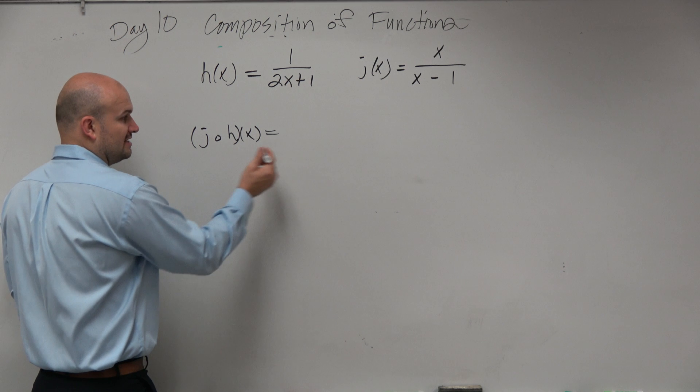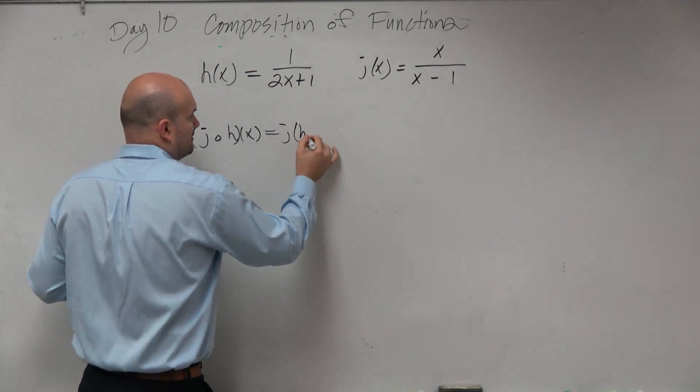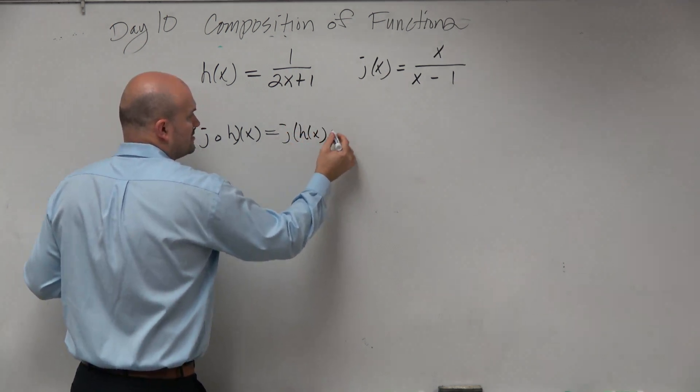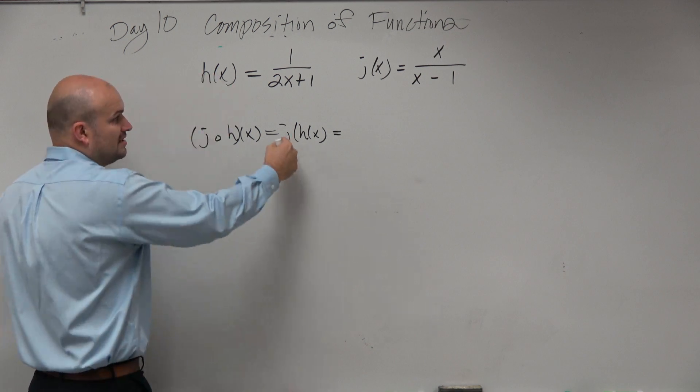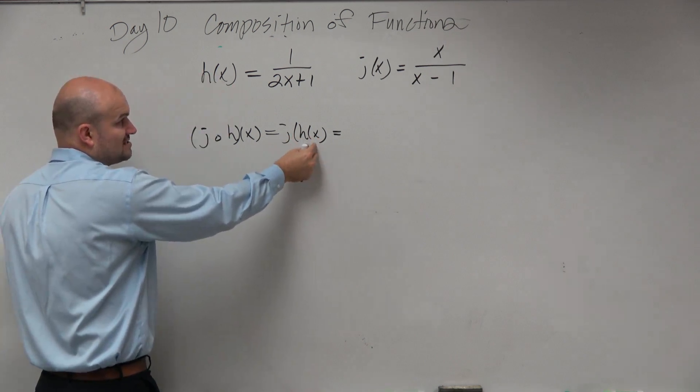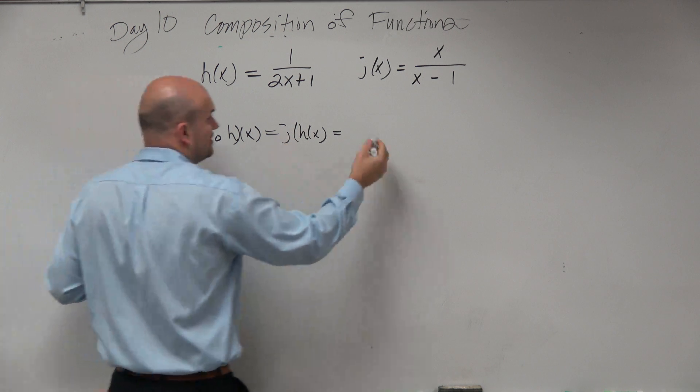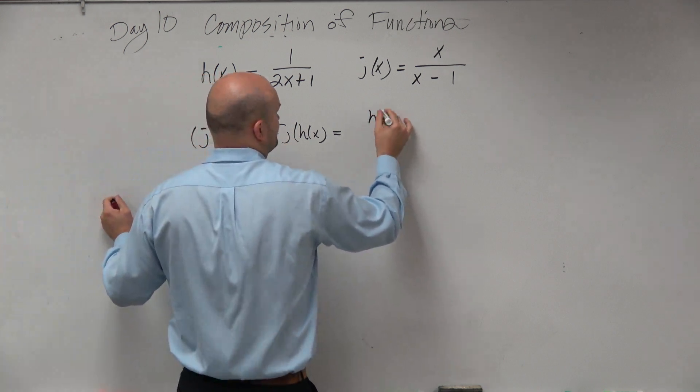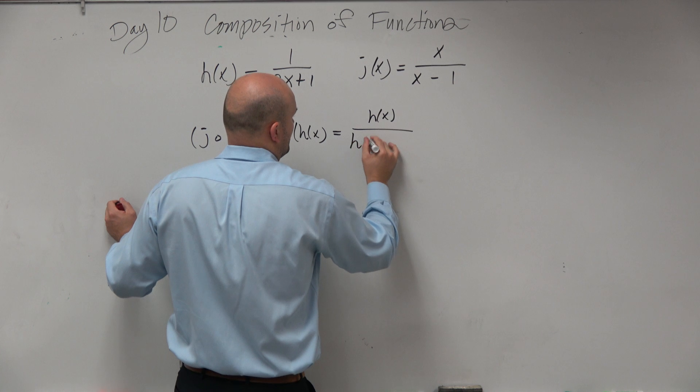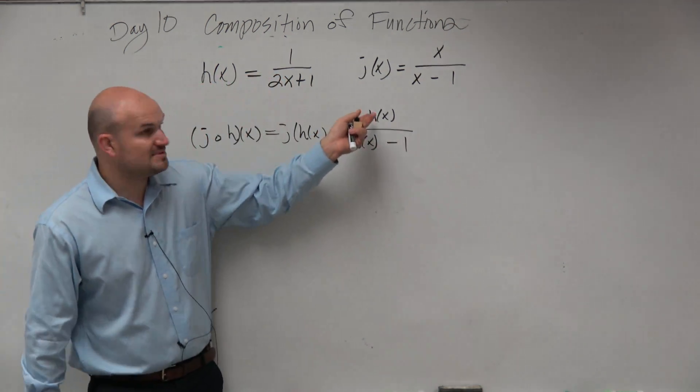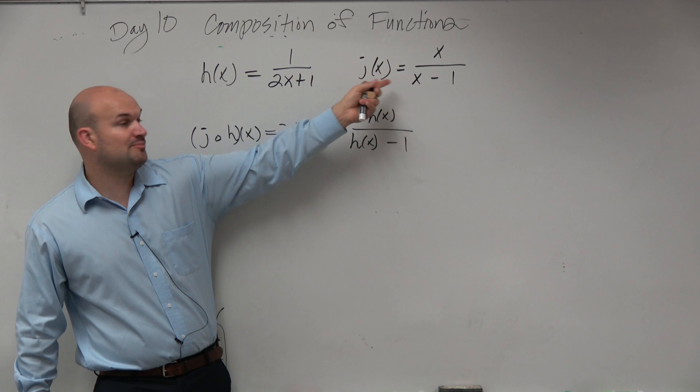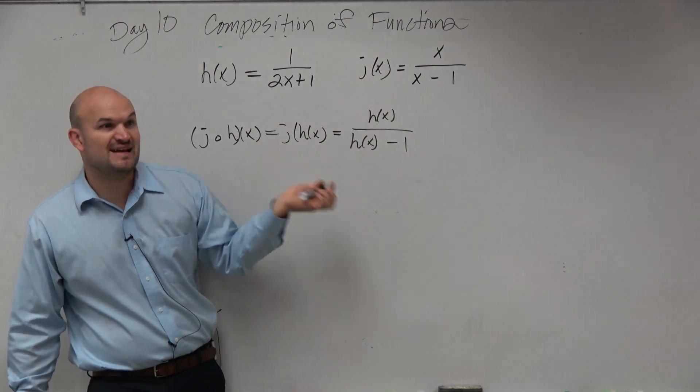The first thing we want to understand is that, again, this is this. So, you don't need to show every step that I'm doing, but just for instructional purposes, j of h of x. So, h of x is being inserted into j of x. So, that looks something like this. You don't need to show this, but I just want everybody to at least agree with me. Everybody agrees that I'm taking h of x and plugging it in for the input variable of j of x.